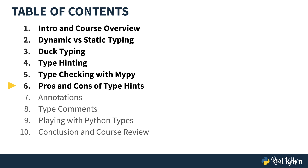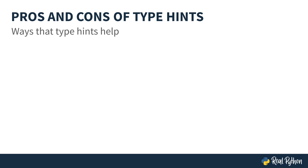In this video, I'll show you the pros and cons of type hints. What are some of the ways that type hints help? First, type hints can help you catch certain types of errors. This you already saw as we demonstrated MyPy in the last video and how it allows you to catch type errors in your own code. And removing those errors goes a long way to helping you with debugging.